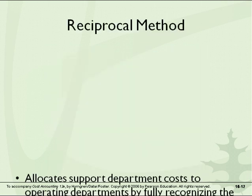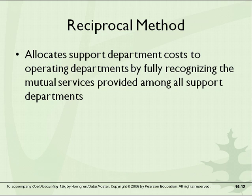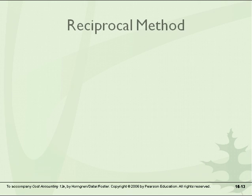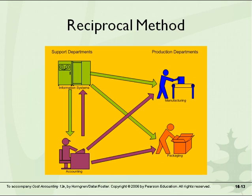With the reciprocal method, we recognize that there is a mutual service being provided among support departments. So there's a full two-way interaction and a full two-way allocation prior to when we allocate support departments to production departments. We see a green line from information to accounting representing an allocation, but we also see an allocation of accounting back to information. After we've done that support allocation, we then allocate to the production departments.